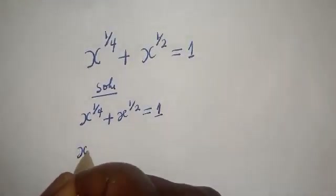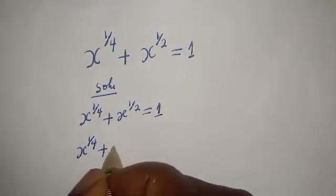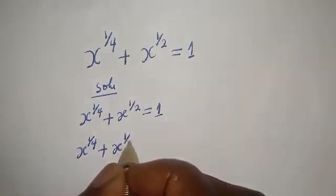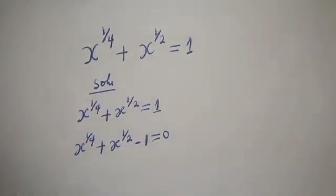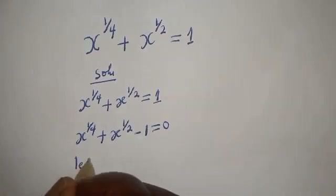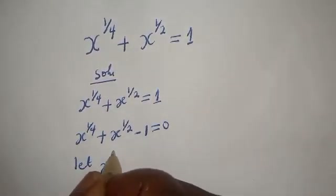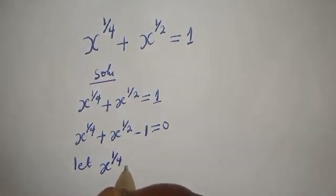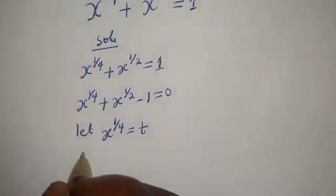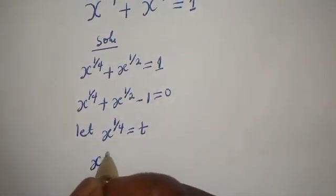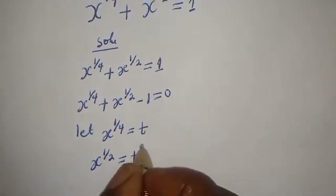Then, x raised to the power 1 over 4 plus x raised to the power 1 over 2 minus 1 is equal to 0. So, let x raised to the power 1 over 4 be equal to t, and x raised to the power 1 over 2 be equal to t squared.